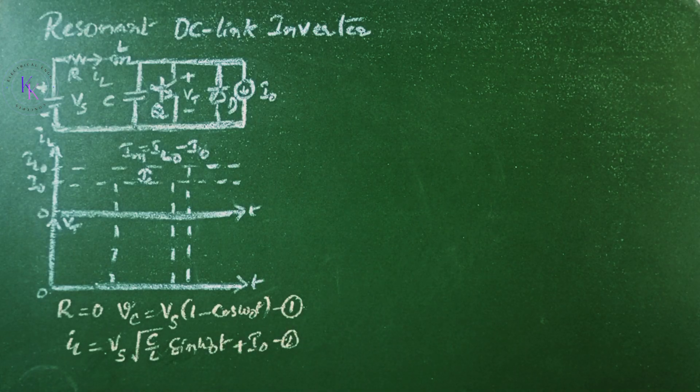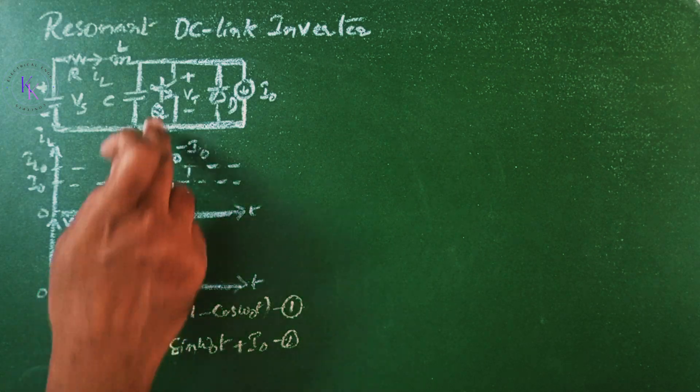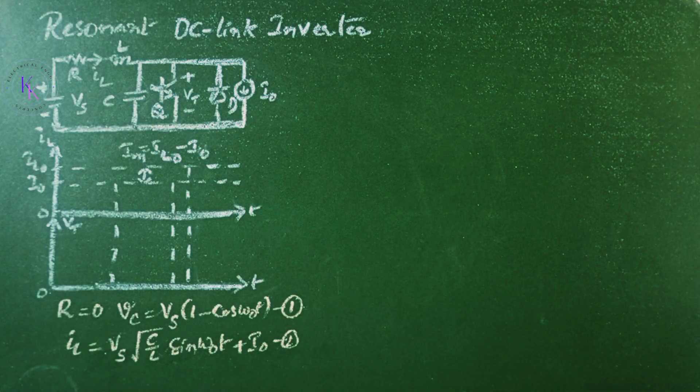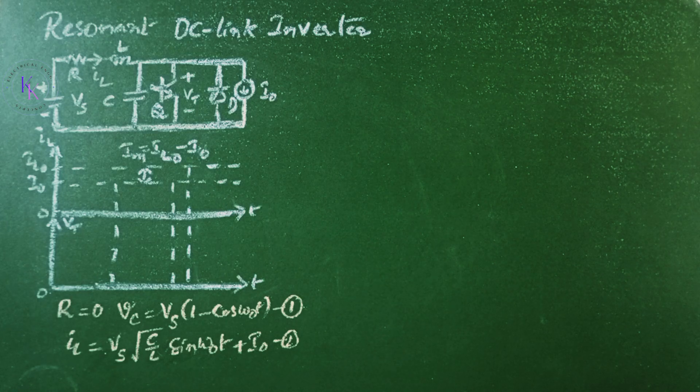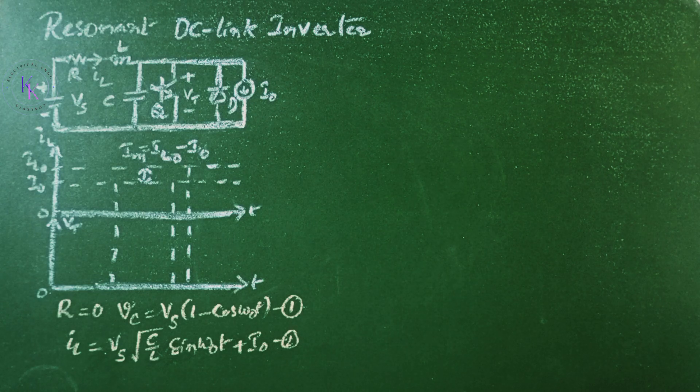Under lossless condition, the oscillation will continue and there will be no need to turn on the switch S. In our case, the switch is a transistor Q. But in practice, there will be power loss in R, and IL will be a damped sinusoidal and the switch is turned on to bring the current to the initial level.